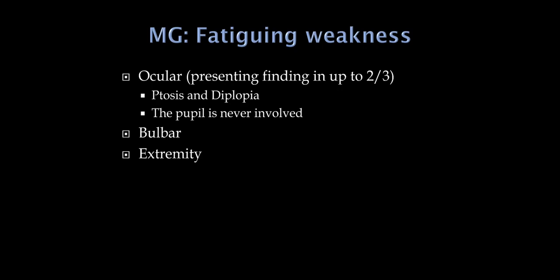With bulbar musculature, if we listen to the patient talk for a while, their speech may become slurred over time as you fatigue the neuromuscular junction, or the patient may complain that prolonged chewing causes jaw muscles to wear out. When checking extremity weakness, it may appear normal initially, but as you give more effort against the muscle you notice it becomes weaker. Patients with myasthenia will usually notice that weakness comes on at the end of the day, when more tired or when exerting themselves.